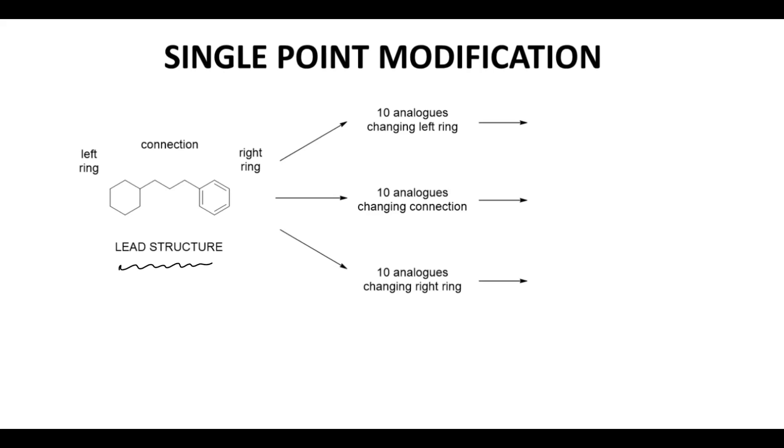Let's assume our MedChem team has three chemists. Coincidentally, our lead structure has three main parts: this one ring on the left, the connection between the two rings, and then the ring on the right.